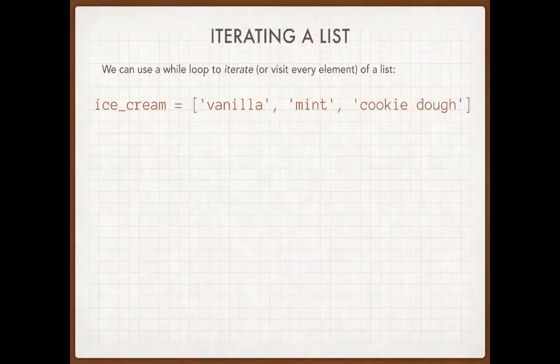What I'd like to do is write a loop that goes through this list. Really all I want to do is maybe print this to the screen, but what my loop should do is visit every element — that is to say, go through this list, open every drawer, and look at the contents of the drawer.